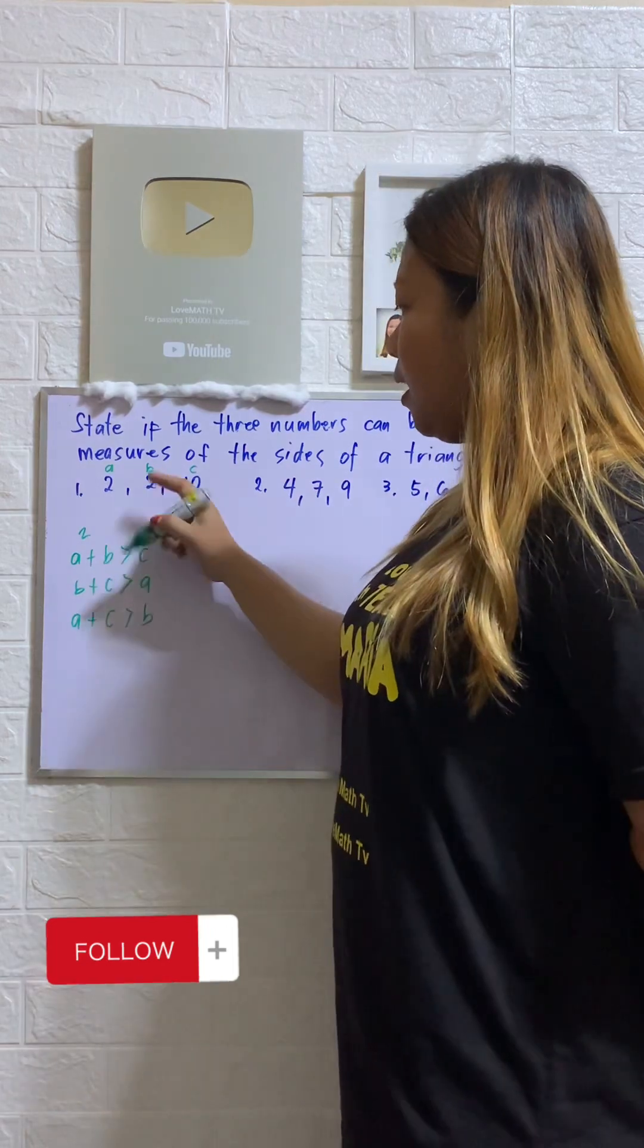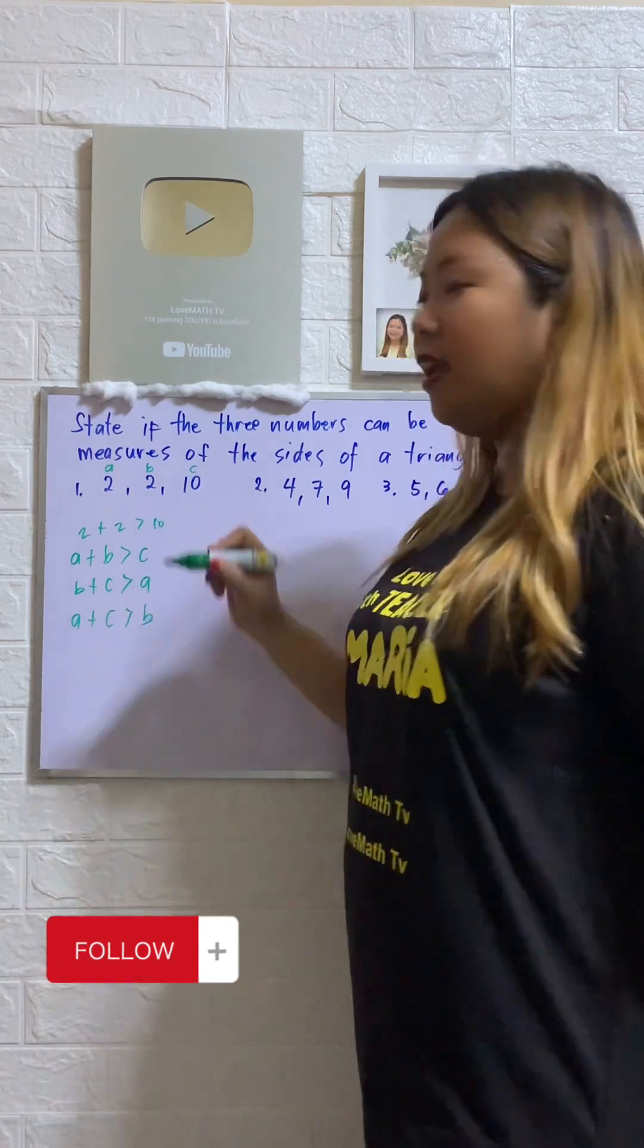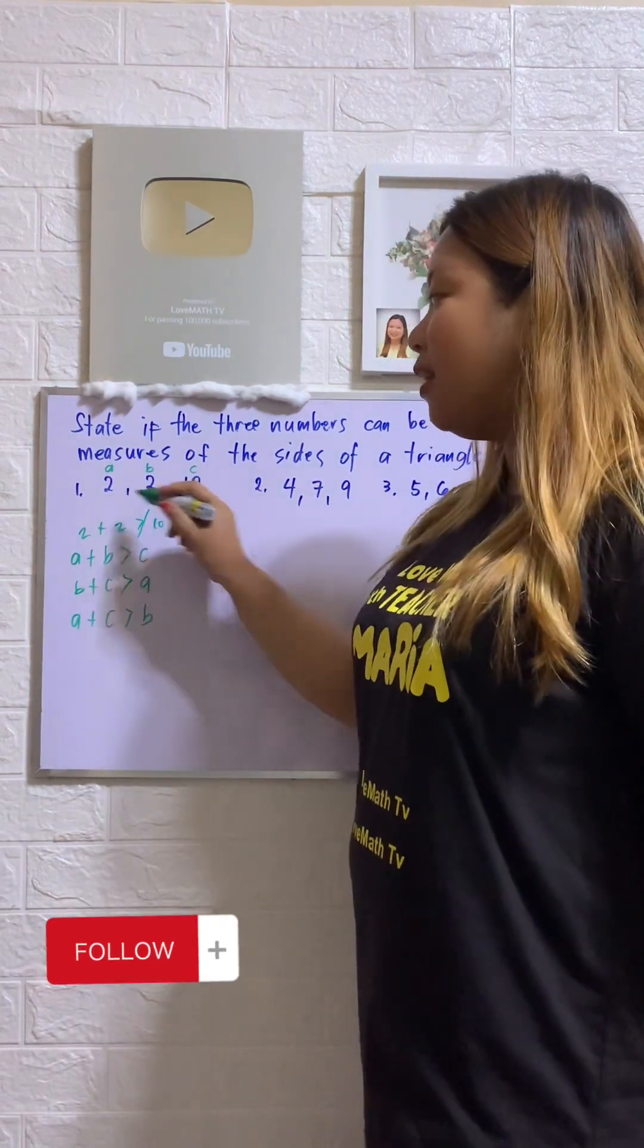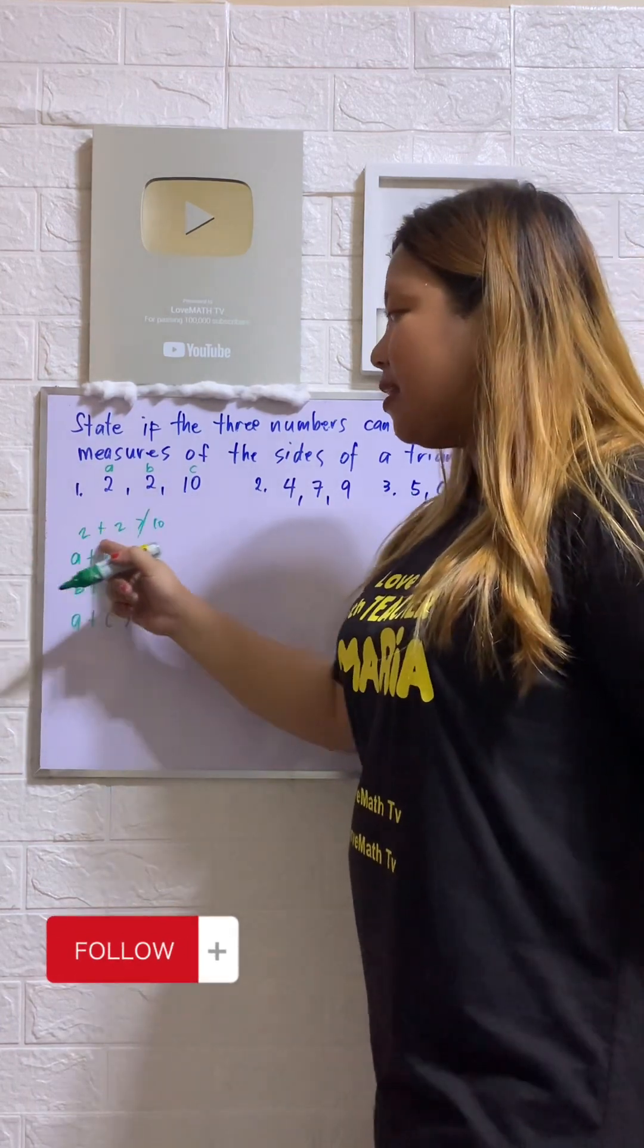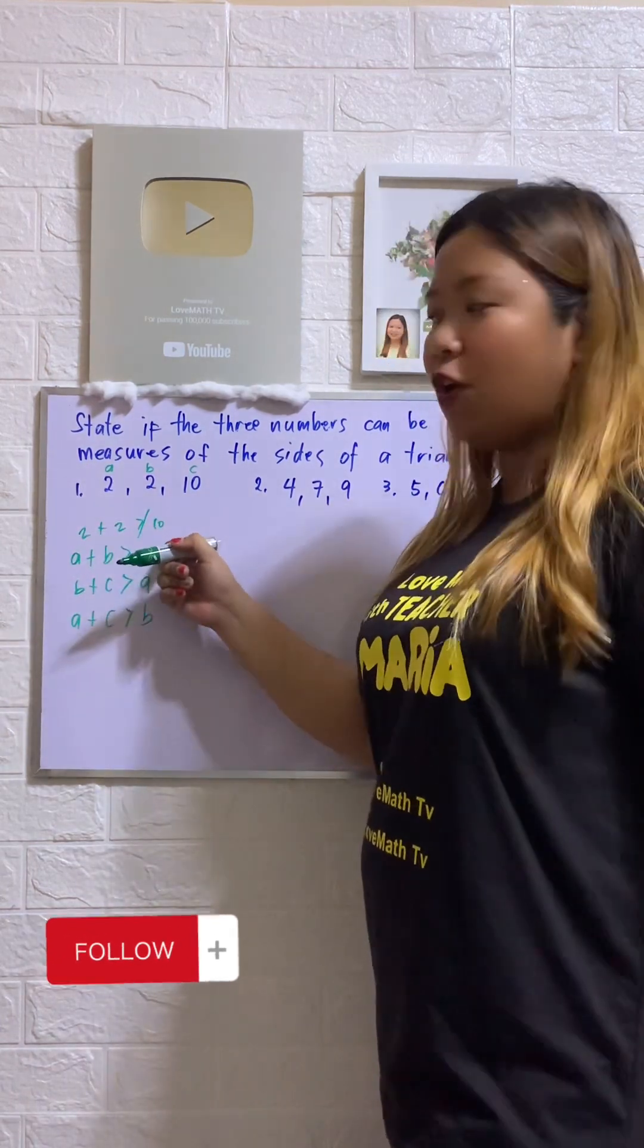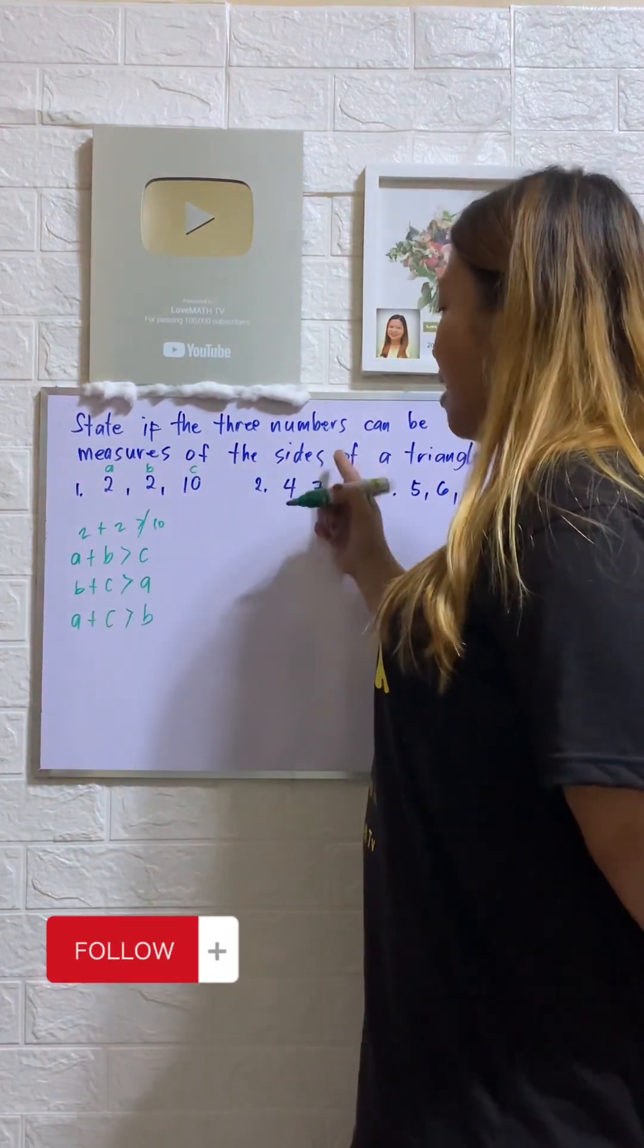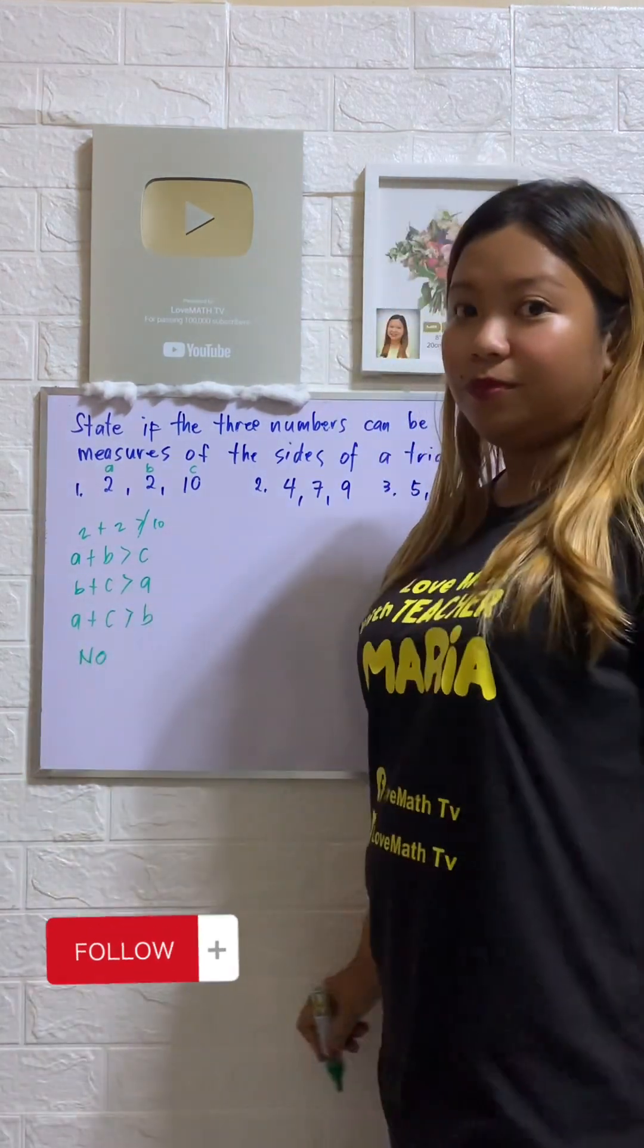Our B is 2. So 2 plus 2, is that greater than 10? Yes or no? So that is no. So at the first try, we did not satisfy the first condition. So this now cannot be considered as the measurement of the sides of the triangle. So we have here, no.